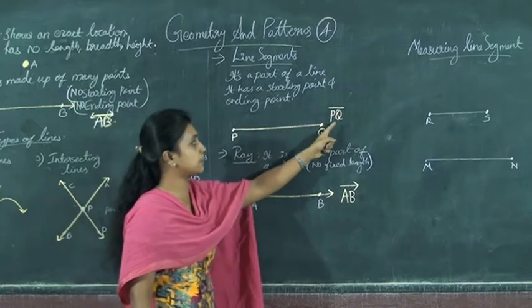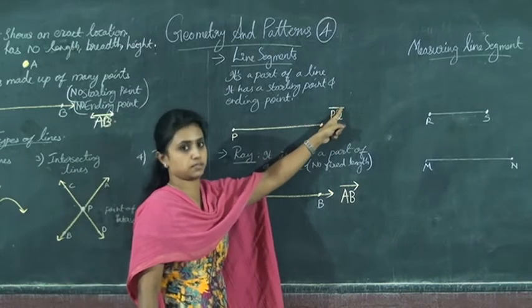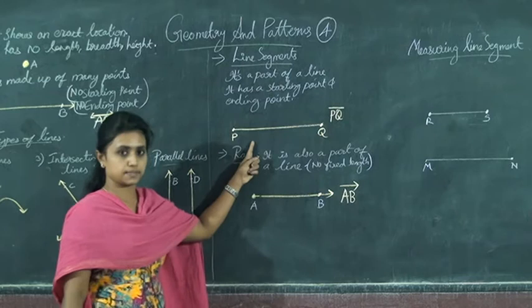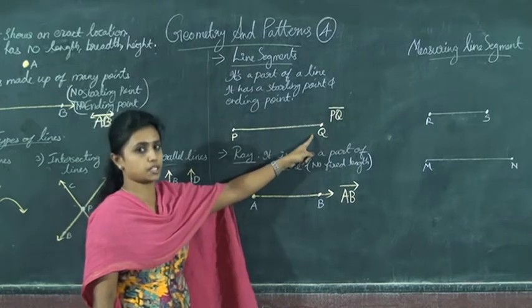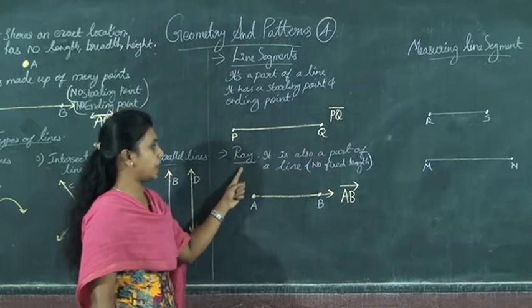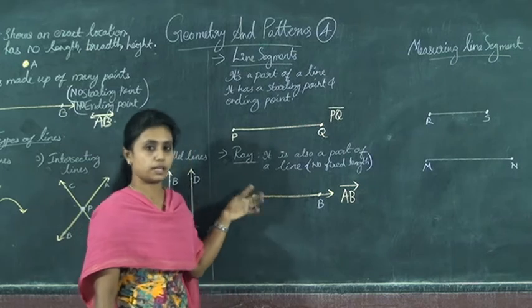To represent a Line Segment, you draw a line segment like this — it has a starting point and an ending point. Then comes Ray. A Ray is also a part of a line.